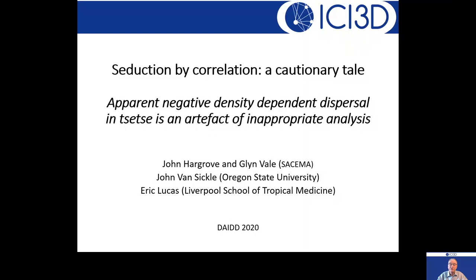I'm from Sosima and this is the faculty lecture, entitled 'Seduction by Correlation: A Cautionary Tale.' It involves looking at the idea of apparent negative density-dependent dispersal in tsetse flies — I call it apparent because my co-authors and I think it's an artifact of inappropriate analysis. I'm joined in this work by Glenn Vale, with whom I've worked for many decades, John Van Sickle, whom I've known since the 1980s, and Eric Lucas from the Liverpool School of Tropical Medicine.